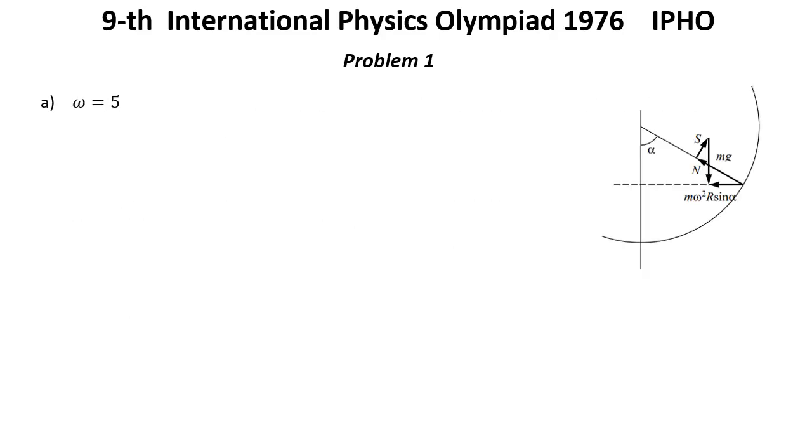Solution for problem 1, Case A. Omega equal 5 radians per second. The block moves along a horizontal circle of radius R sine alpha. The net force acting on the block is pointed to the center of this circle.